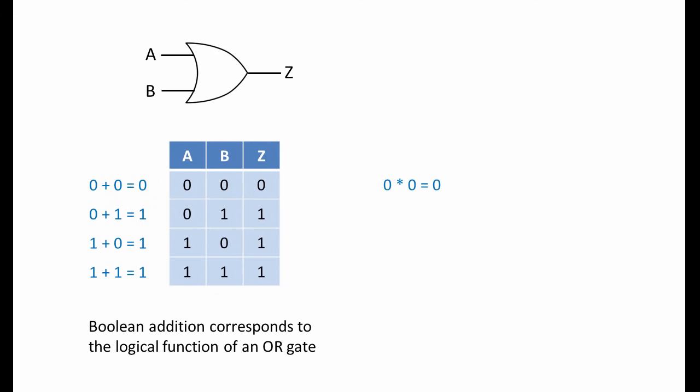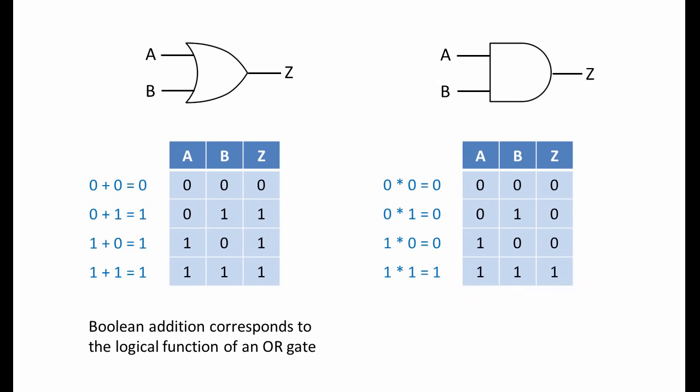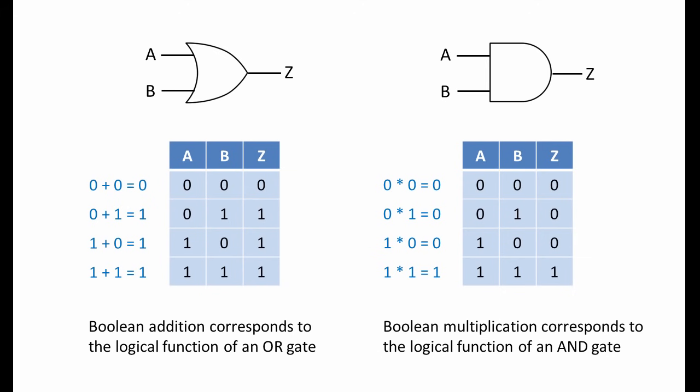Now look at these multiplication operations — no surprises here at all. Compare these with the truth table for an AND gate: Boolean multiplication corresponds to the logical function of an AND gate. By the way, there's no such thing as Boolean subtraction — that would imply the existence of negative numbers, but there is only 1 and 0. There's no such thing as Boolean division either, because division is actually repeated subtraction.